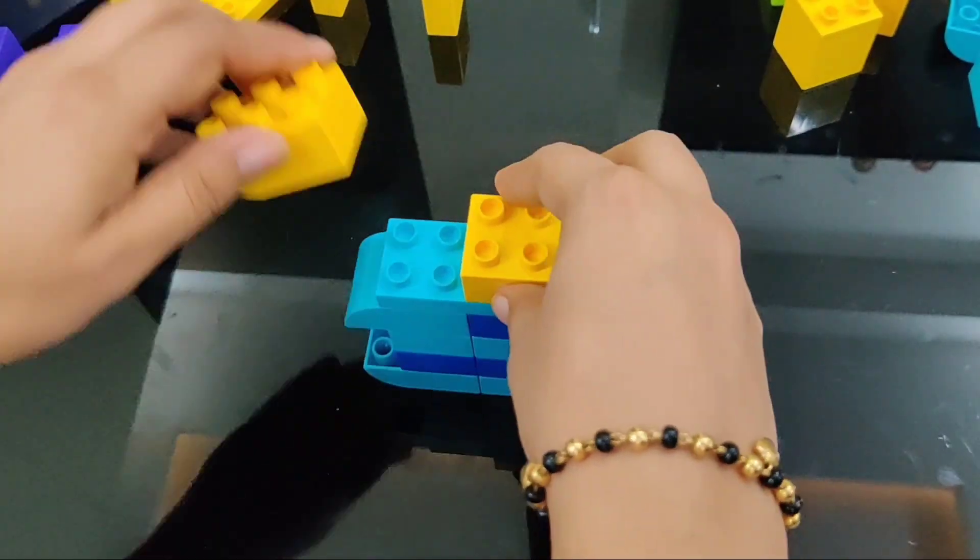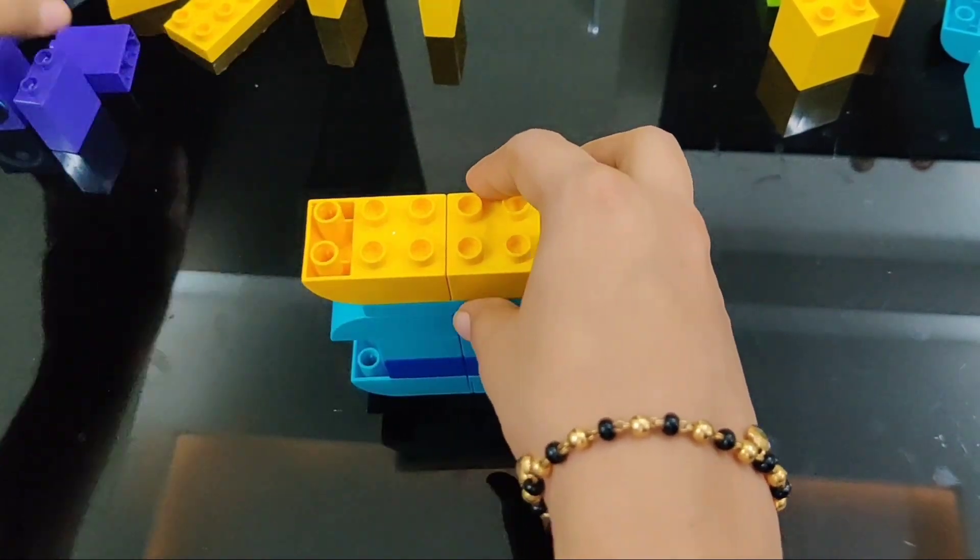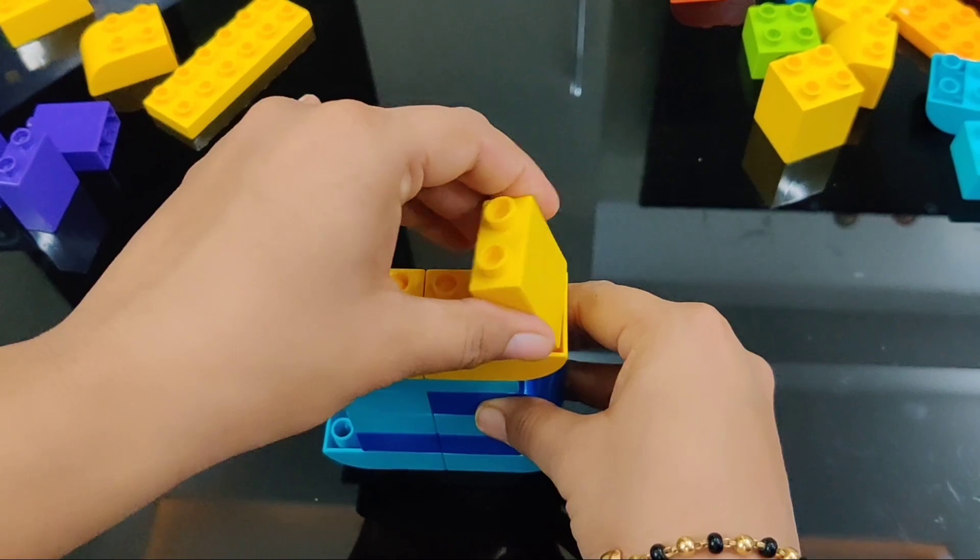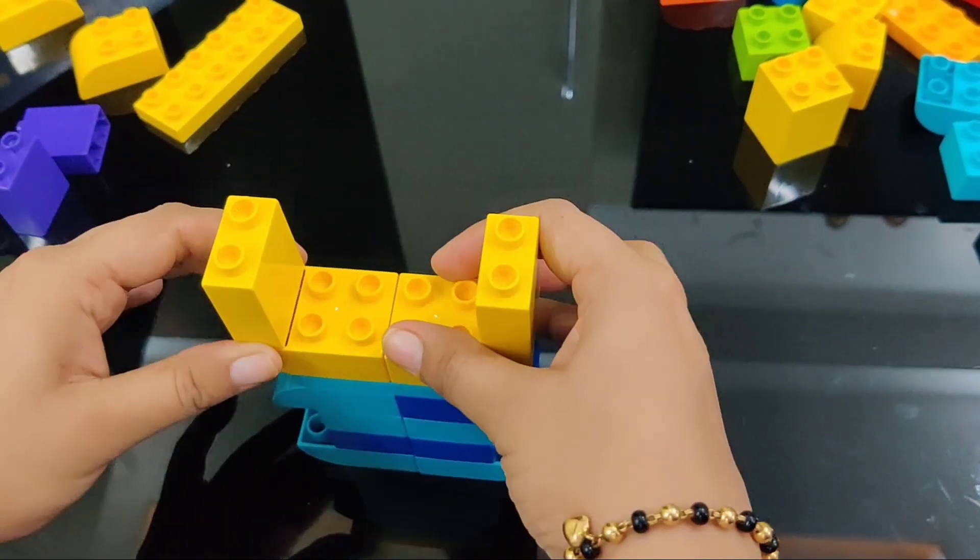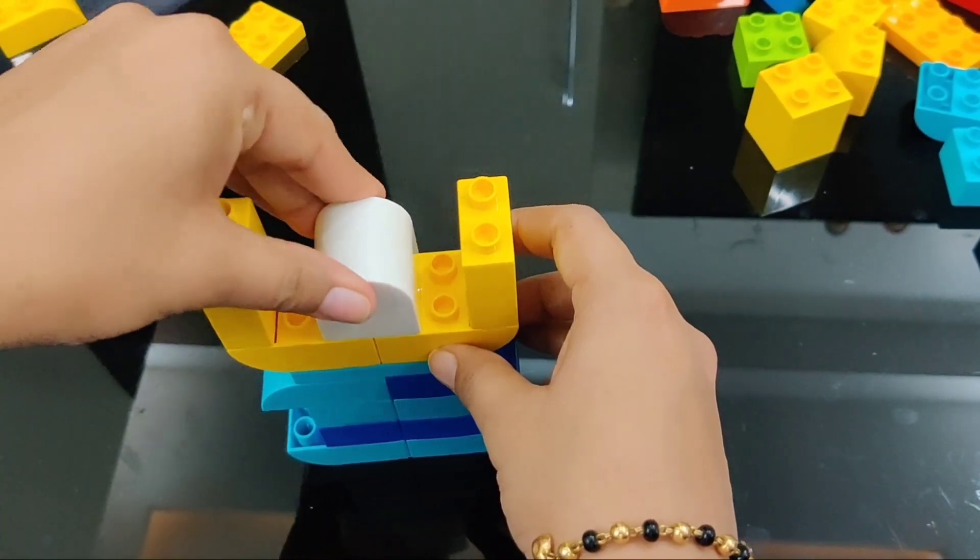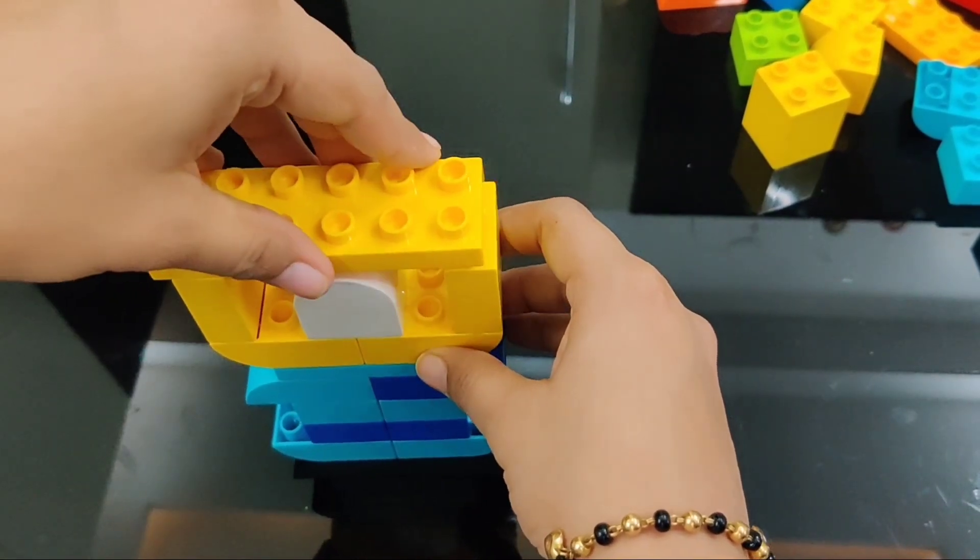Here come the yellow blocks for making the mouth and we are attaching a white block completing the mouth of the monster. I think this is a very big and tall monster. I think he is the leader of all the other monsters.